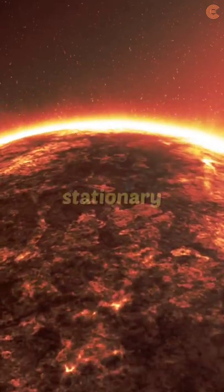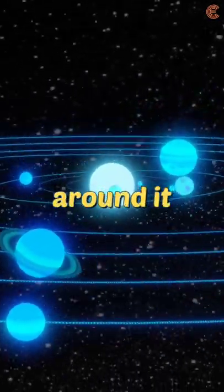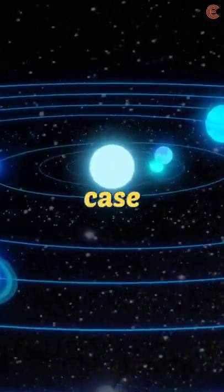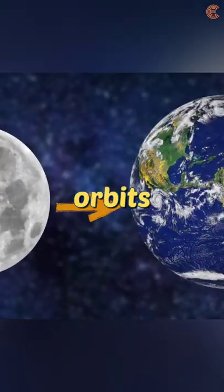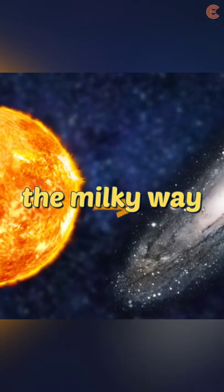We tend to think of the Sun as the stationary heart of our solar system, with the planets orbiting serenely around it. But this is not the case. In reality, the Moon orbits the Earth, the Earth orbits the Sun, and the Sun orbits the Milky Way.